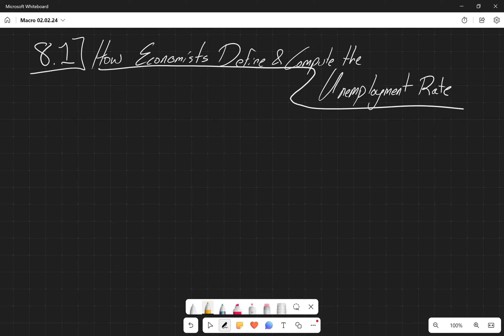All right, chapter 8. So we're going to talk about how economists define and compute the unemployment rate. And interestingly enough, there's more than one unemployment rate, which we'll explore towards the end of class.